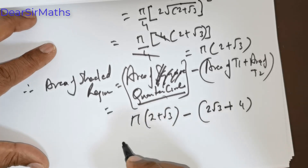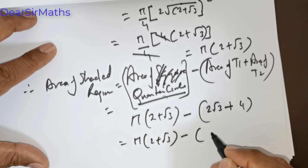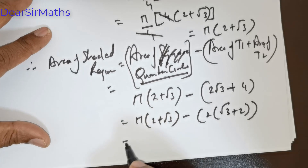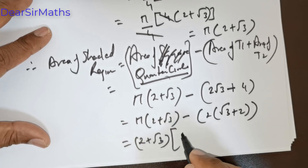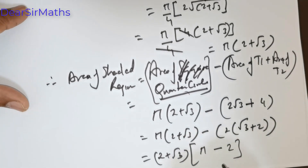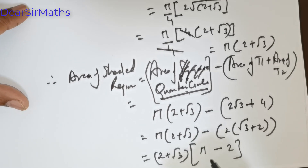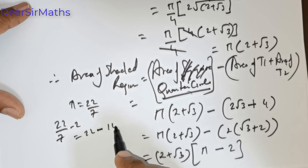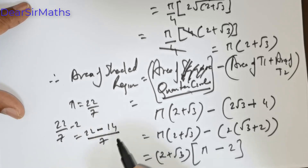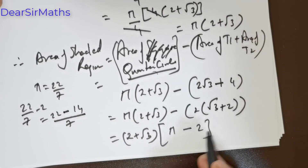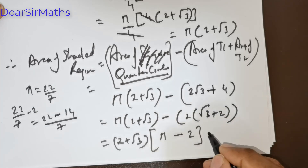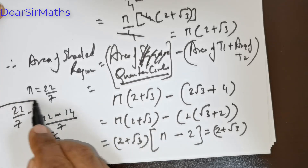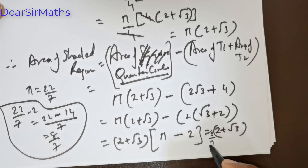This equals (2 + √3)(π minus 2). If you want to simplify using π as 22/7: π minus 2 equals 22/7 minus 2 equals (22 minus 14)/7 equals 8/7. So the shaded area equals (2 + √3) times 8/7 square units.